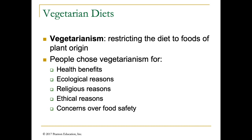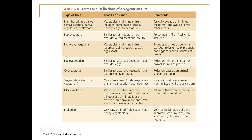Speaking of protein deficiency: vegetarian diets restrict people to foods of plant origin. This causes difficulties because protein is more bioavailable from animal sources than plant sources. However, there are plenty of animal-derived proteins that don't involve eating the flesh of animals, so many people elect to consume those. There are health benefits, as well as ecological, religious, and ethical reasons for choosing not to consume meat, plus concerns over food safety given difficulties in ensuring sanitary conditions in modern meat production.